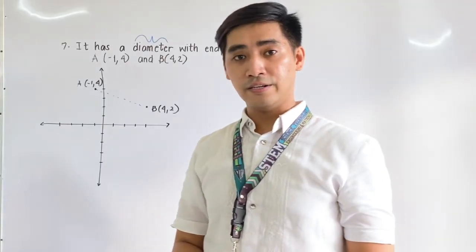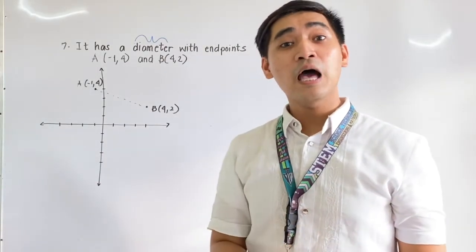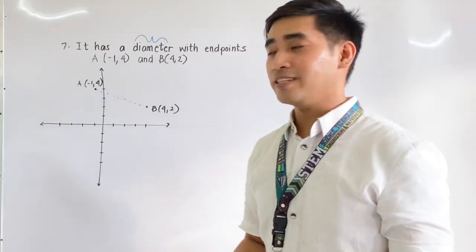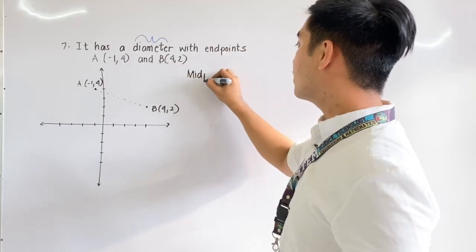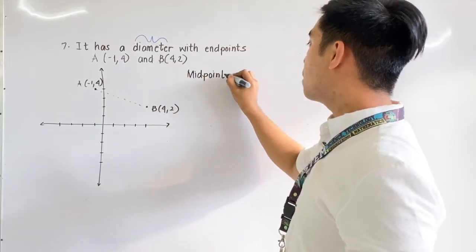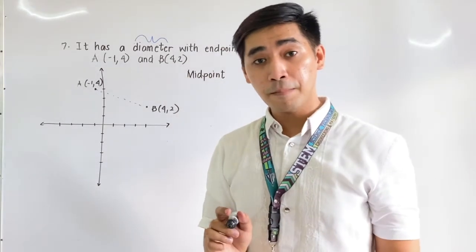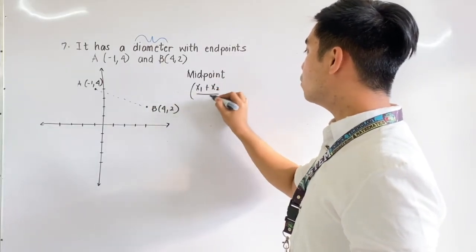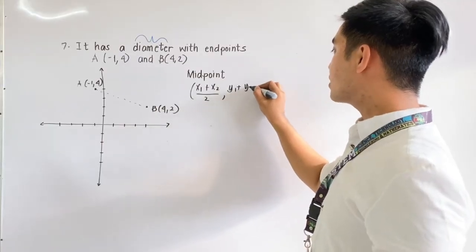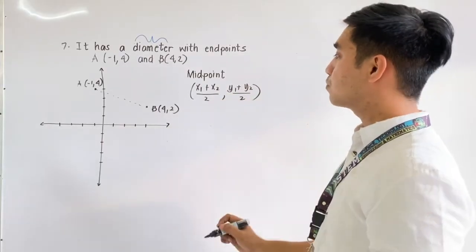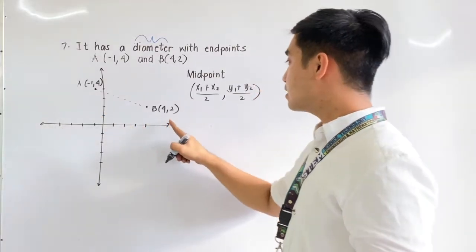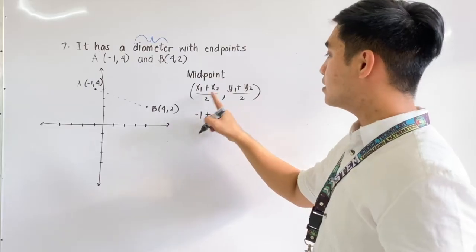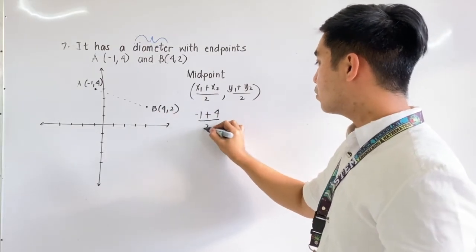So how do we get the center? All we have to do is get its midpoint, and that midpoint is equal to the center. The formula for the midpoint is x1 plus x2 over 2, and y1 plus y2 over 2. This is point 1 and this is point 2, therefore x1 is negative 1, plus x2 which is 4, over 2.